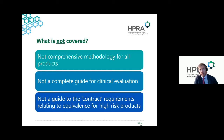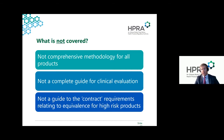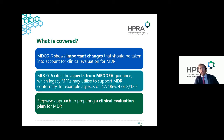At the CIE working group, updating MEDDEV 2.7/1 revision 4 comprehensively was considered, but it was deemed not possible with the time available before the date of application. These two guidance documents show the still-relevant parts of guidance from MEDDEV 2.7/1 revision 4 that can still apply. The guidance does not cover the contract requirements for high-risk products for equivalence in detail. The primary goal of the equivalence guide was to provide a gap analysis with a standardized table.